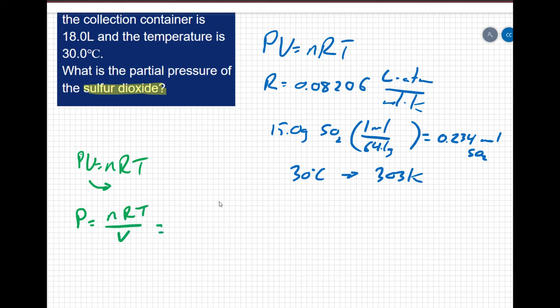So my moles of sulfur are 0.234 moles. My ideal gas constant is 0.08206 liters times atmospheres, moles times kelvin. My temperature is 303 kelvin. I'm going to divide that whole thing by my volume, which is 18 liters.